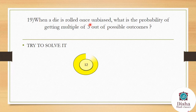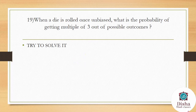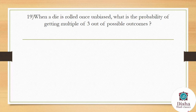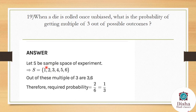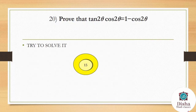When an unbiased die is rolled once, what is the probability of getting a multiple of 3? A die has 6 outcomes: {1, 2, 3, 4, 5, 6}. Multiples of 3 are 3 and 6, so there are 2 favorable outcomes. Probability = 2/6 = 1/3.